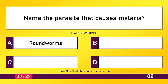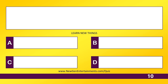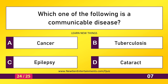Name the parasite that causes malaria. Plasmodium. Which one of the following is a communicable disease? Tuberculosis.